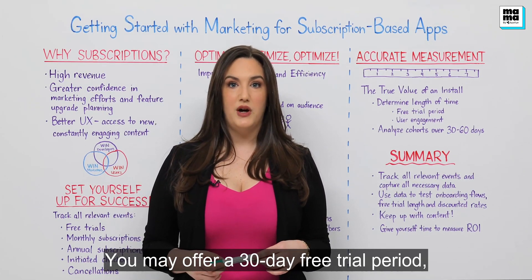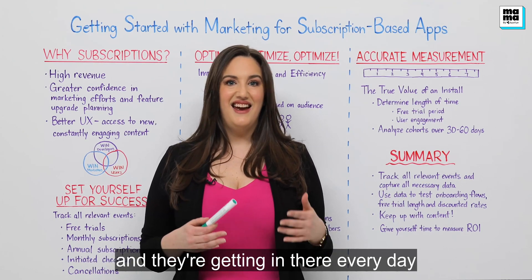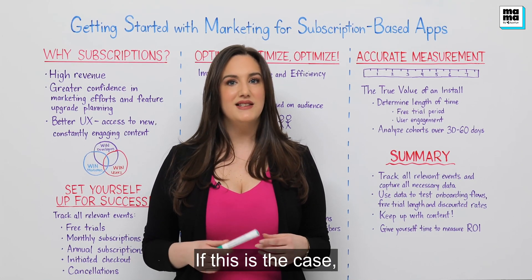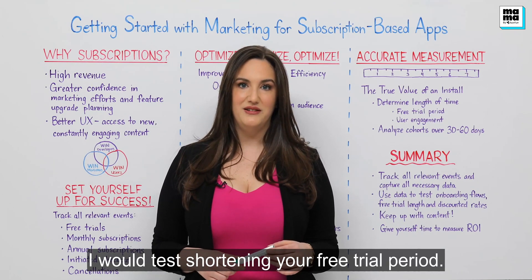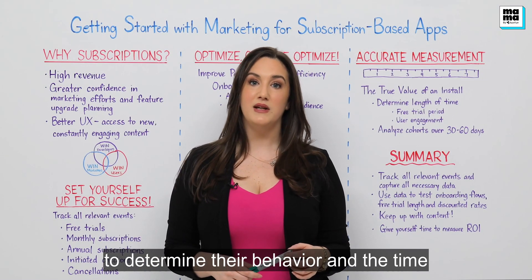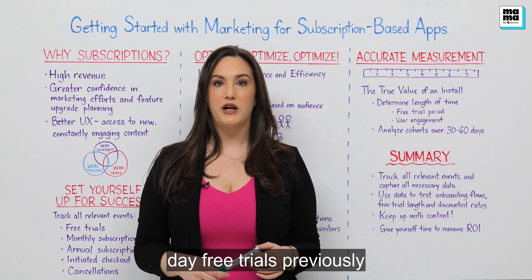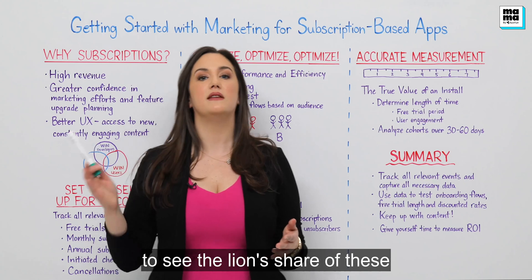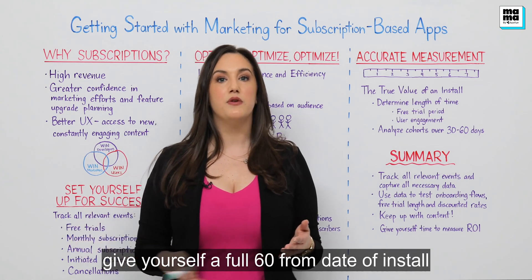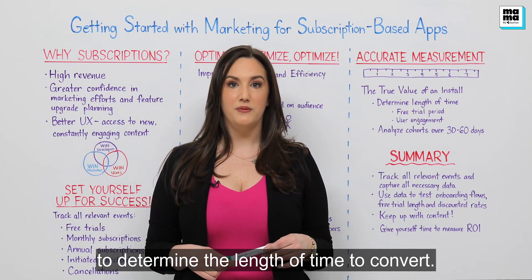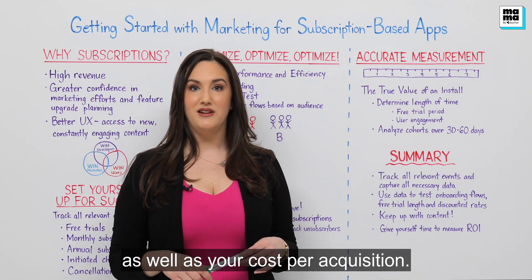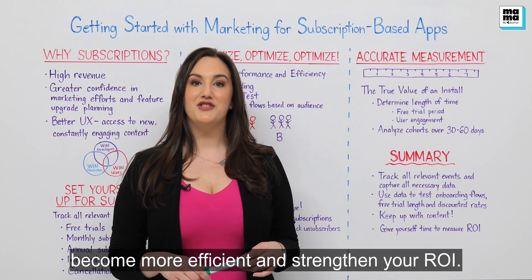Figuring out this length of time depends heavily on your free trial period but also on how quickly you can hook those users. You may offer a 30-day free trial, but if users are really loving the content and engaging daily, you may find installs are turning into subscriptions within two weeks — in which case I would test shortening your free trial period. I suggest analyzing cohorts of new users over 30 to 60 days to determine their behavior and time to convert. If your free trial is 30 days, give yourself a full 60 days from date of install to determine conversion. Knowing these metrics helps you calculate your conversion rate from install to subscription, your cost per acquisition, and strengthens your ROI.